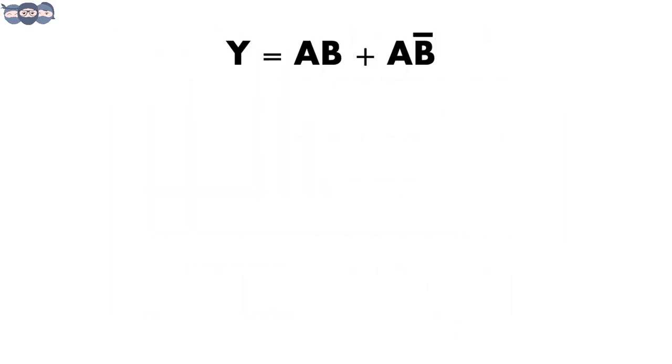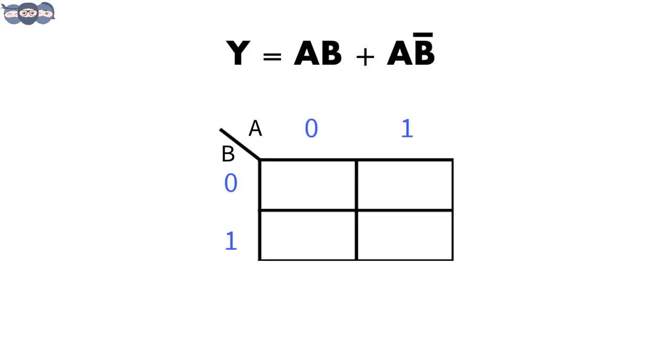So, for this expression, we have two product terms, A, B and A, B bar. In the kmap, we will indicate these terms by 1 and rest of the two terms are 0 by default.